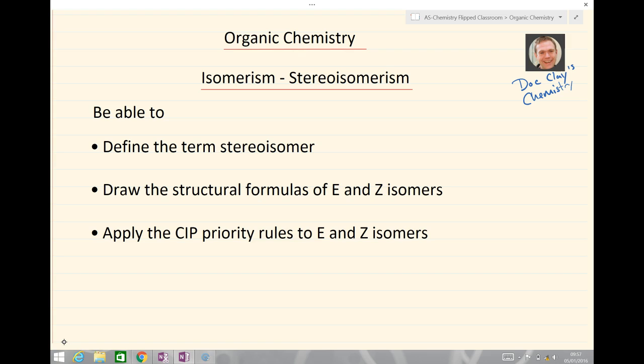Define the term stereoisomer, draw the structural formulas of E and Z isomers, and also apply the CIP priority rules to E and Z isomers.